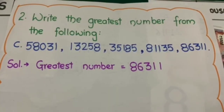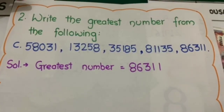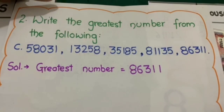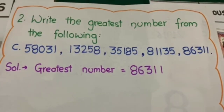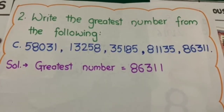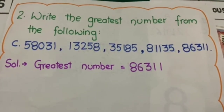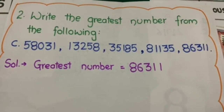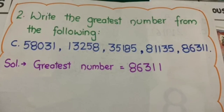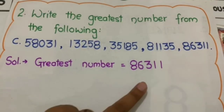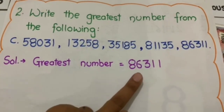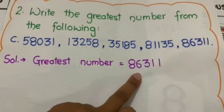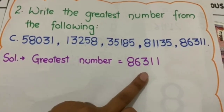Now in your notebooks, you will write the question, then the part you are answering, and at last the solution. Greatest number is equal to 86,311.